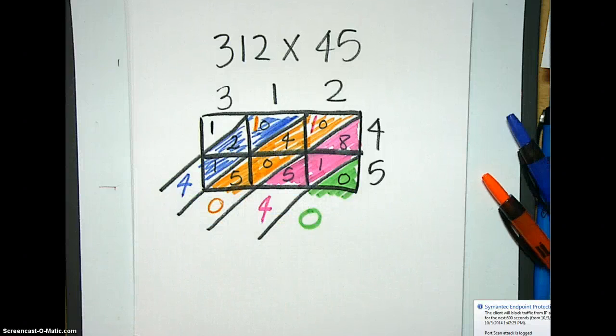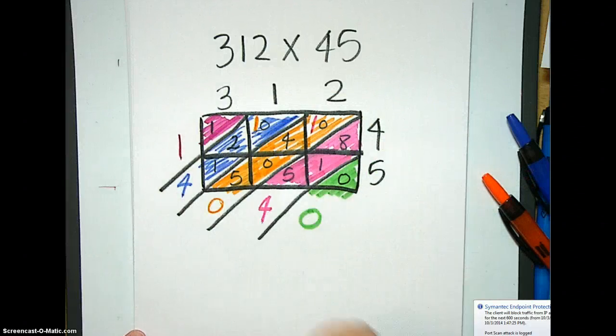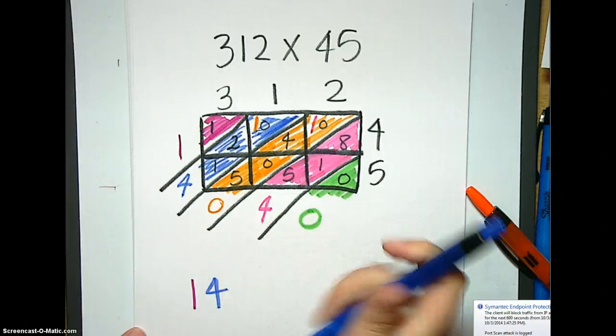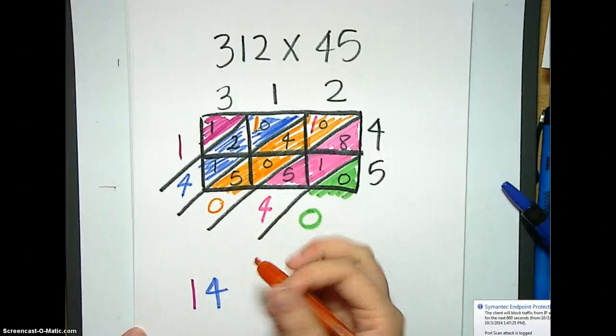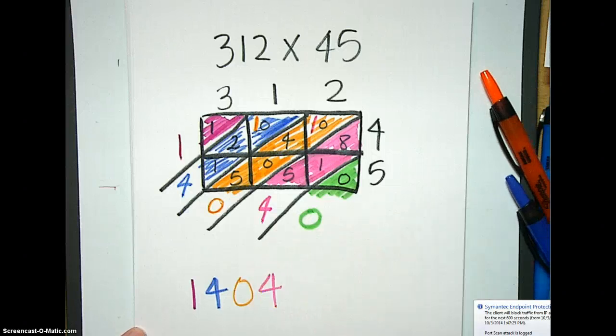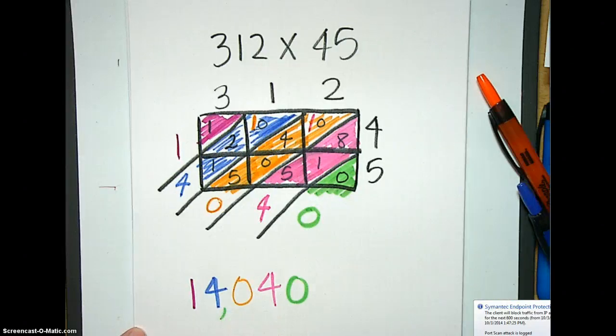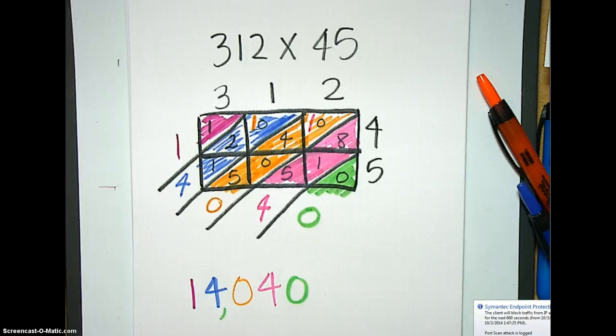And then our last diagonal is just one all by itself. So our answer is going to be 1, 4, 0, 4, 0. So we have, looks like 14,040 is our answer to 312 times 45. We're going to do just one more. It's a little bit bigger. It's still not very hard.